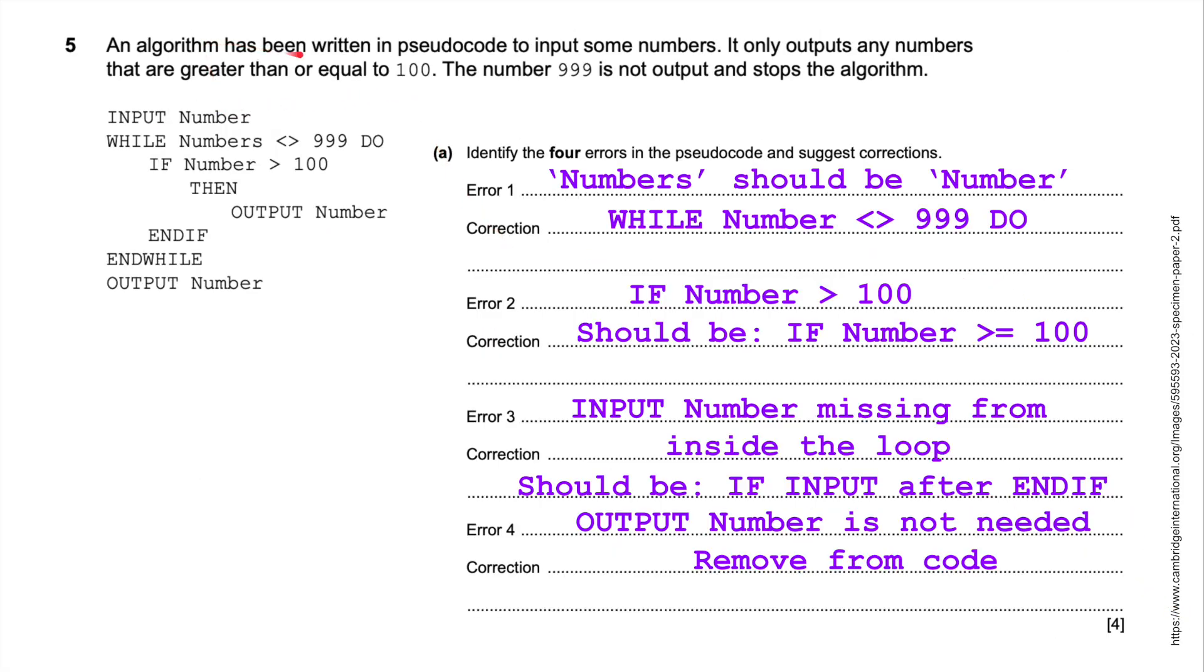We've got four errors in this code. An algorithm has been written in pseudocode to input some numbers. It only outputs any numbers that are greater than or equal to 100. The number 999 is not output and stops the algorithm. So input number, while the number is not less than or greater than 999, do if number is greater than 100, which says here greater than or equal to, so I think we've got something going wrong there. You've got numbers and you've got number there. So there's something gone wrong. This one that says numbers should read number. As I said before, if the number is greater than 100, it should be if it's greater than or equal to 100.